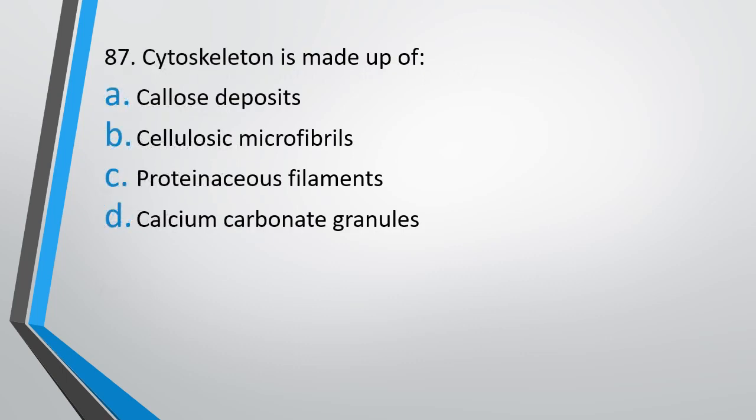Question number 87. Cytoskeleton is made up of: (A) callose deposits, (B) cellulosic microfibrils, (C) proteinaceous filaments, (D) calcium carbonate granules. The correct answer is option C, that is proteinaceous filaments.